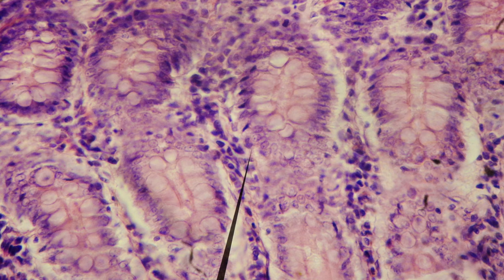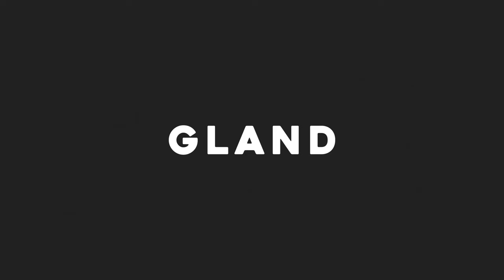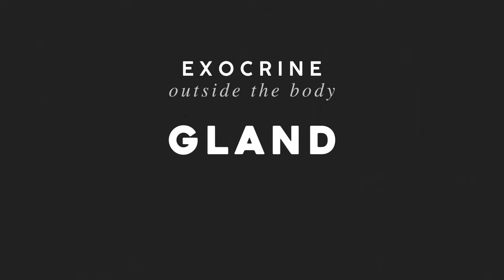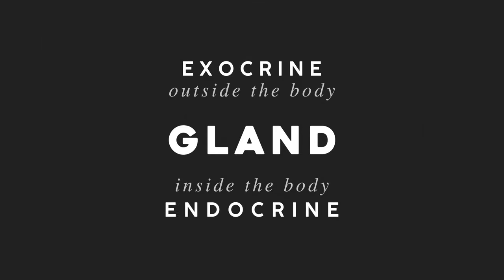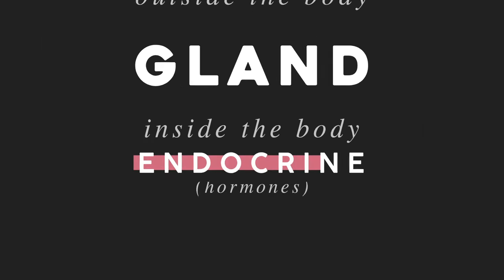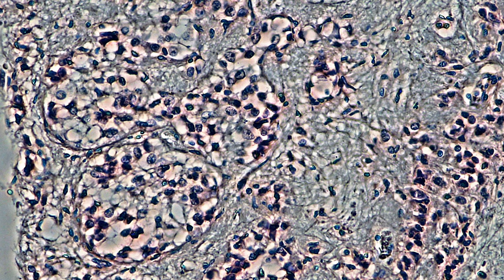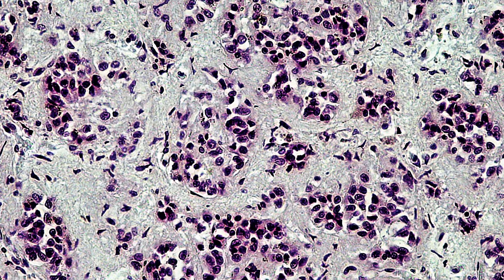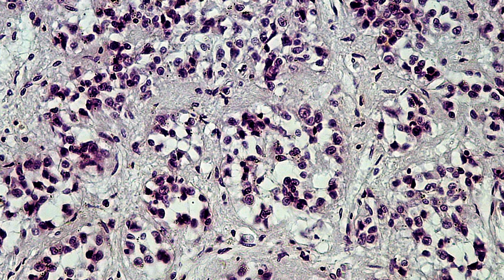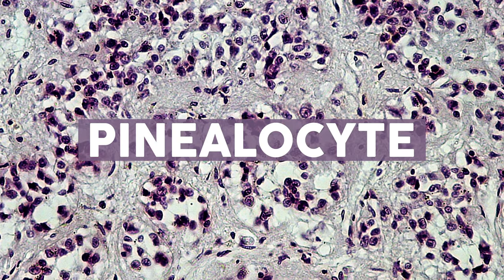We divide glands further based on how and where they release their message. They might send and receive messages outside the body — what are called exocrine glands — or within the body, what are called endocrine glands. The endocrine system is responsible for hormones. When endocrine glands secrete hormones, they travel through the bloodstream until they arrive at the target tissue and communicate their message. These glands can show up in a lot of different places — like here's the pineal gland in the brain, home to nervous tissue like astrocytes but also to epithelial cells called pinealocytes that pump out the hormone melatonin.